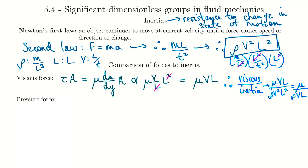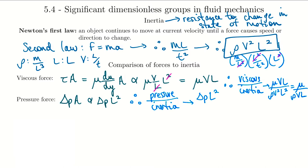Next is the pressure force. The pressure force is delta P times the area it acts over, and area is proportional to L². So the pressure force is delta P · L². The ratio of pressure forces to inertia forces gives delta P over rho·V² — that's how we'd calculate the pressure-to-inertia force ratio.